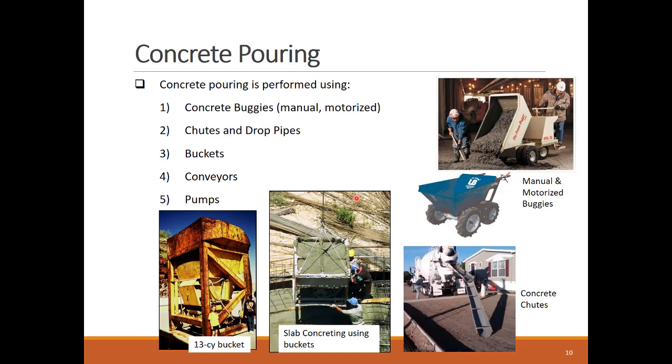There are many ways to pour the concrete in its place. In small and tight sites, buggies, either manual or motorized, can be used to receive the concrete from a mixing location or holding truck and deliver it to the pouring spot. Chutes are commonly used to pour small grade slabs, and drop pipes are used to pour concrete in low elevations or underwater.